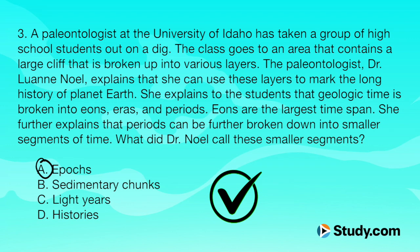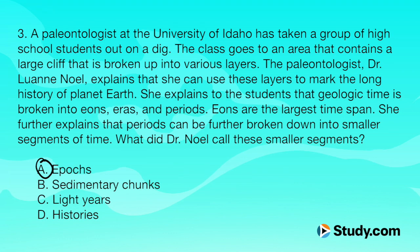Epochs — the literal definition is just a smaller time frame within another time frame. When we break down a period into smaller segments of time, we call those epochs. Option B, sedimentary chunks, would just refer to a chunk of sedimentary rock. C, light years, is a measurement used in astronomy for how far a beam of light travels in one year. And D, histories — I don't even believe that is a measurement of time.